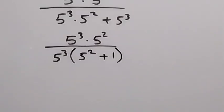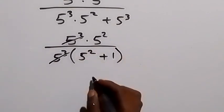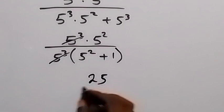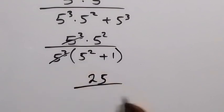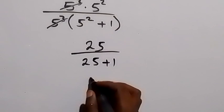Then we have 5 raised to power 3 times 5 raised to power 2, which gives us 25. Divide by also 5 raised to power 3, that's 25, then plus 1 here. 25 plus 1 is 26, so we can say this is 25 over 26.